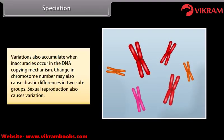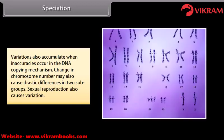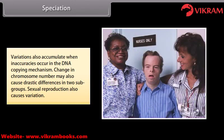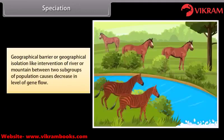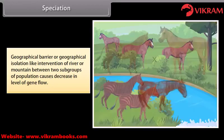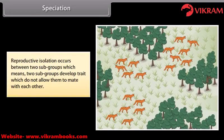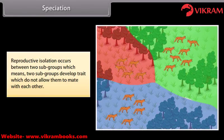Variations also accumulate when inaccuracies occur in the DNA copying mechanism. Change in chromosome number may also cause drastic differences in two subgroups. Sexual reproduction also causes variation. Geographical isolation, like the intervention of a river or mountain between two subgroups, decreases gene flow, leading to reproductive isolation where two subgroups develop traits that do not allow them to mate with each other.